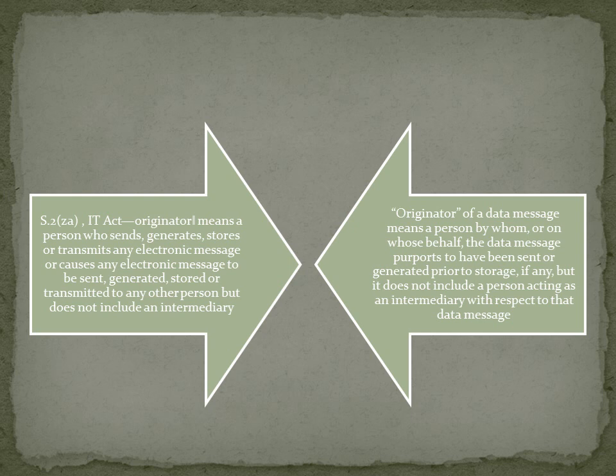The UNCITRAL model law defined originator as: originator of a data message means a person by whom or on whose behalf the data message purports to have been sent or generated prior to storage if any, but it does not include a person acting as an intermediary with respect to that data message. Now let us see section 2(za) of the IT Act which also defines the term originator depending on the definition given by UNCITRAL model law. According to this section, originator means a person who sends, generates, stores or transmits any electronic message or causes any electronic message to be sent, generated, stored or transmitted to any other person but does not include intermediary.